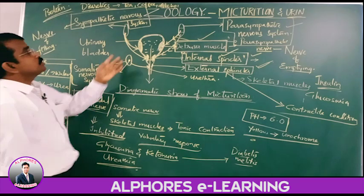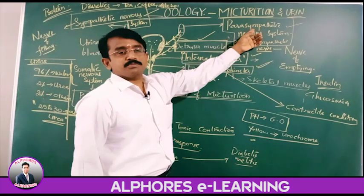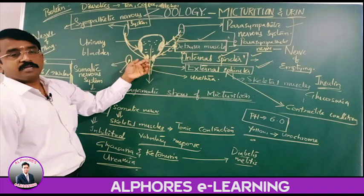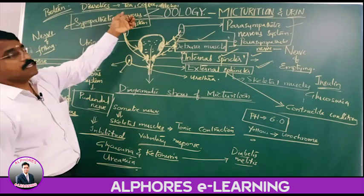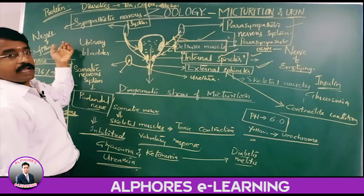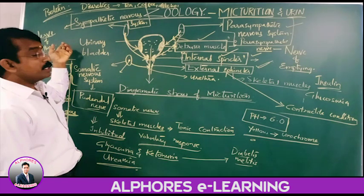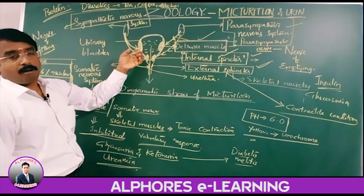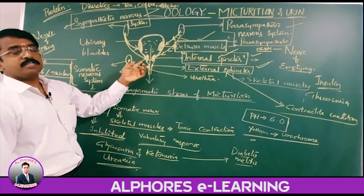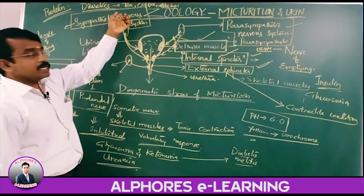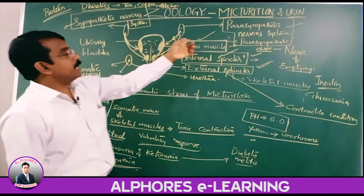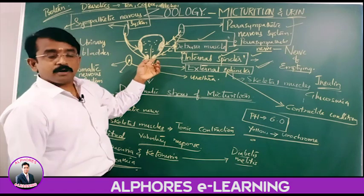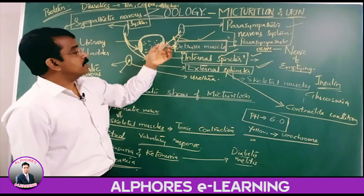Basically, the sympathetic and parasympathetic nervous systems are innervated into the detrusor muscles as well as the internal sphincter. The sympathetic nerve is the nerve of filling — the detrusor muscles in the urinary bladder are relaxed and the internal sphincter is contracted by sympathetic, so urine gets filled. The parasympathetic nervous system causes contraction of the detrusor muscles and relaxation of the internal sphincter.